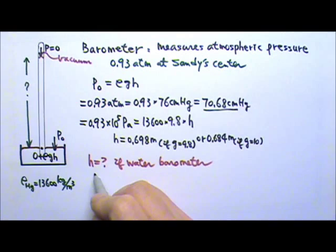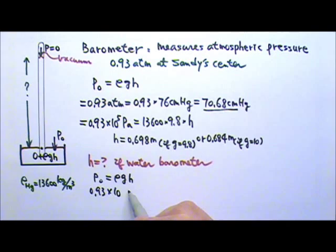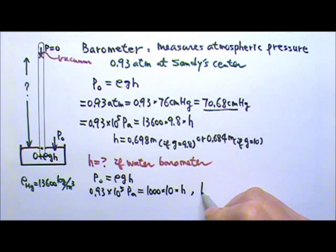Again, the pressure on the two sides must be equal. So P₀ equals ρgh. The P₀ is 0.93 atm, so it's 0.93 times 10 to the fifth Pascals. And the density of water is 1000. I'm just going to use 10 for g and then the h. You'll find h to be 9.3 meters.